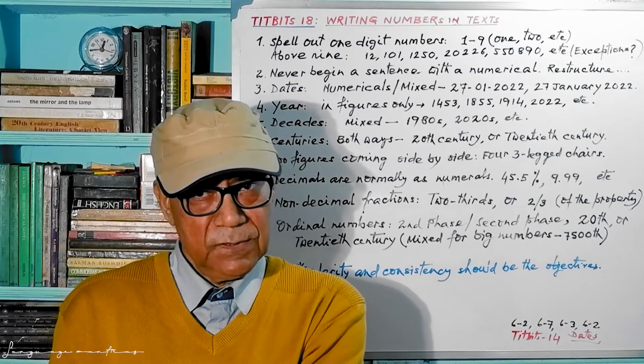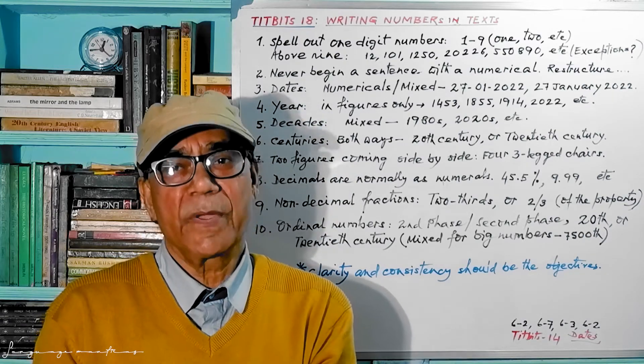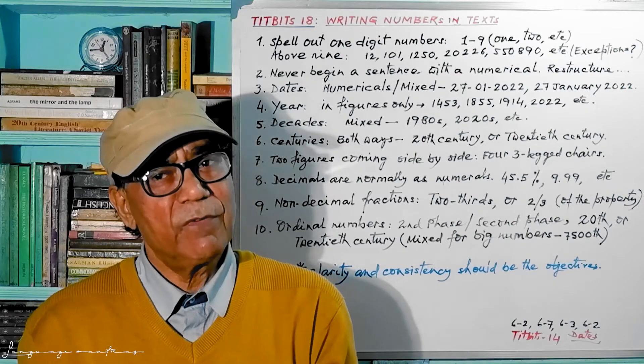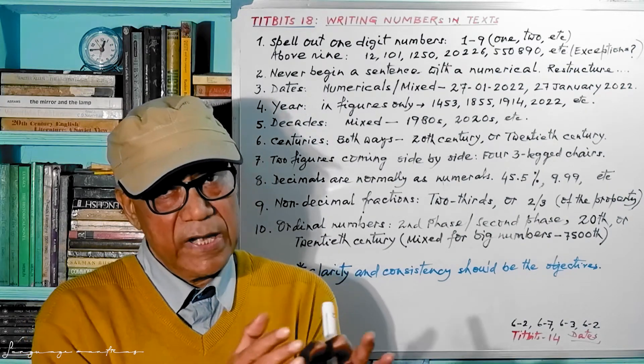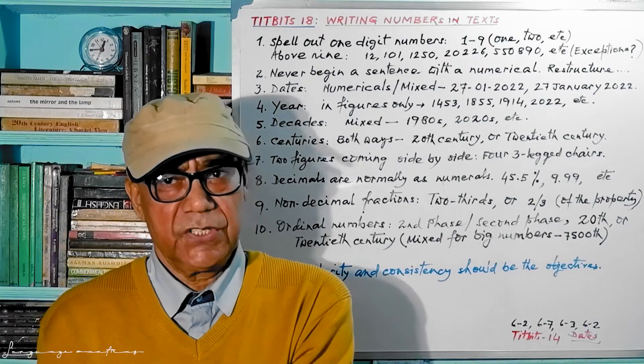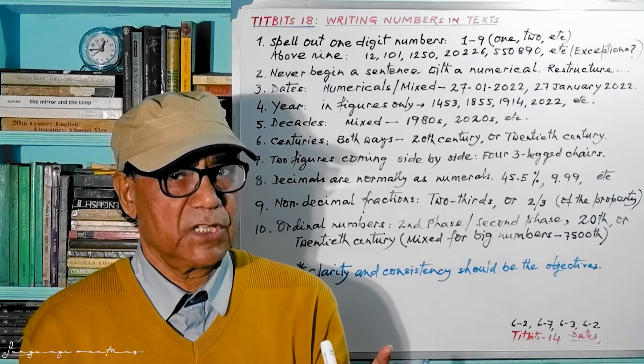Some exceptions are there. Airlines timetable or railway timetable or scoreboard of any sports or games, you will find figures are there whether it is one digit or two digits, does not matter much. So this is exceptions, but we are talking about formal writing.